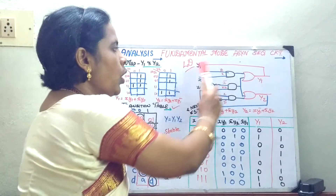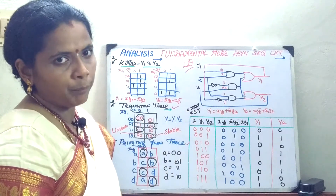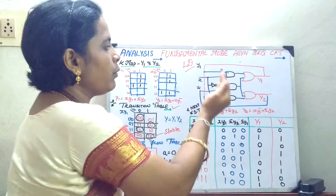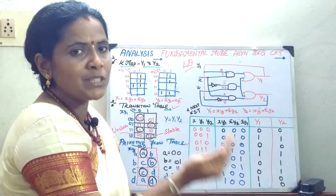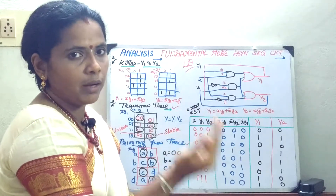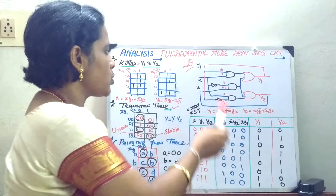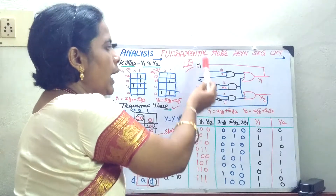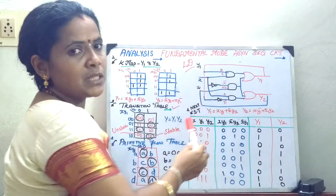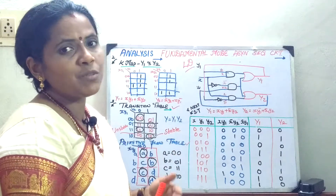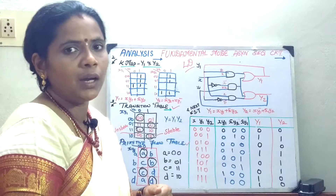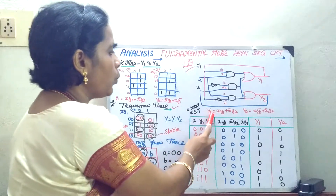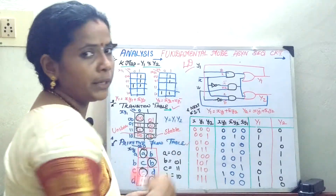We will move on to the logic diagram. Y1 and Y2 are the excitation variables which represent your next state, whereas X, Y1, Y2 are the variables called secondary variables which represent your present state. Now we will write the expression for Y1 and Y2.